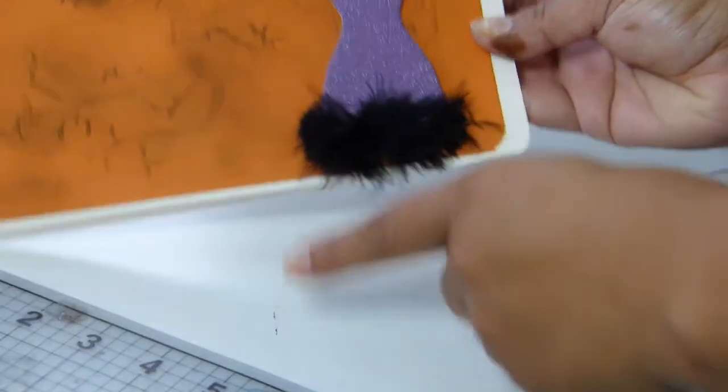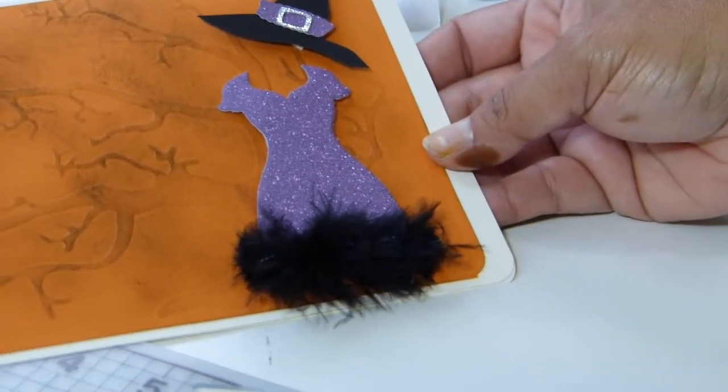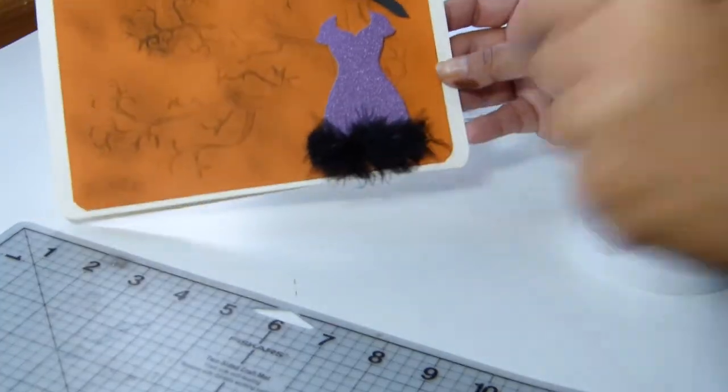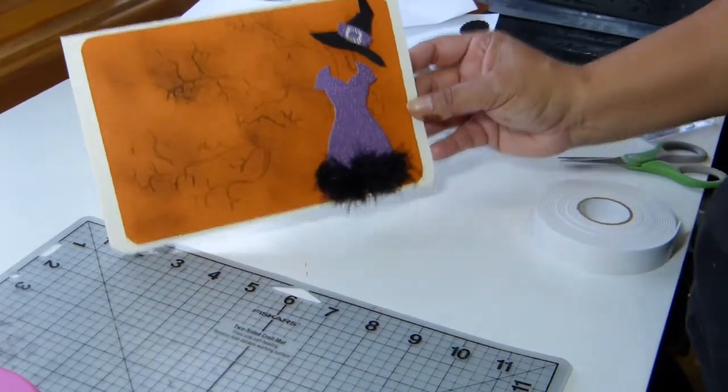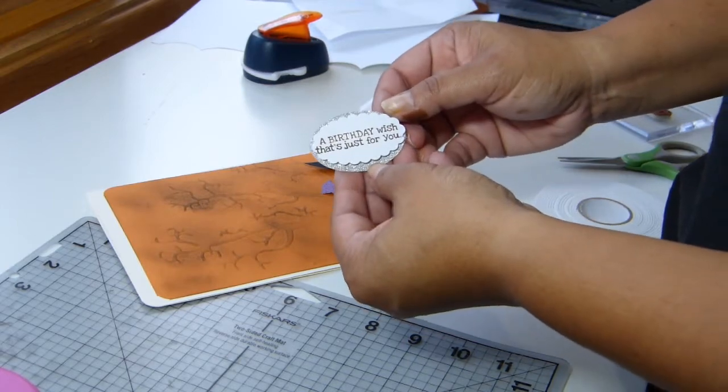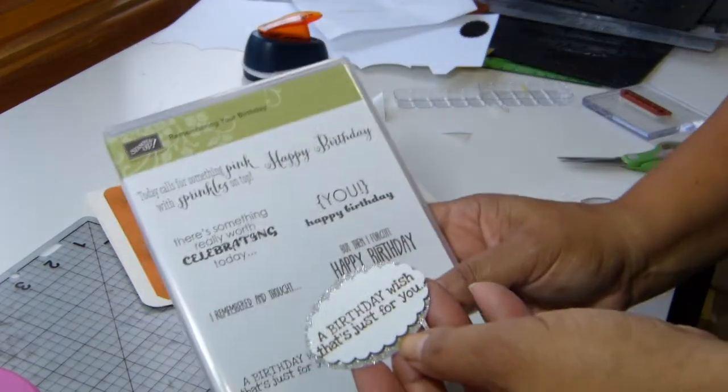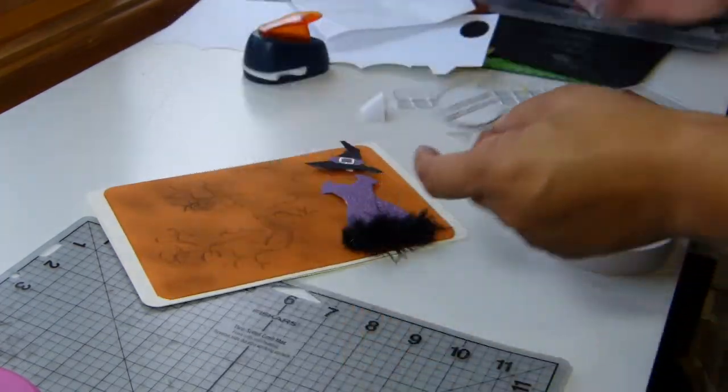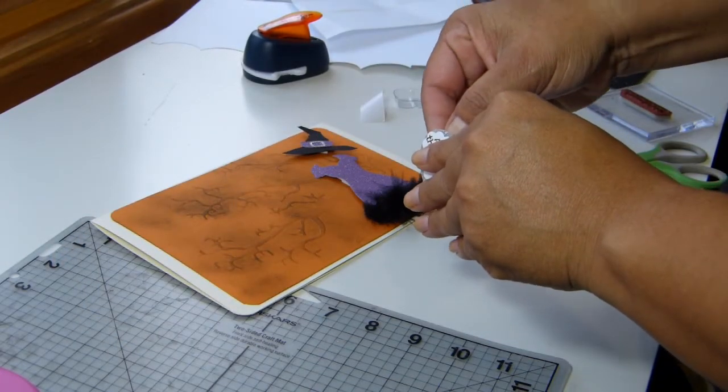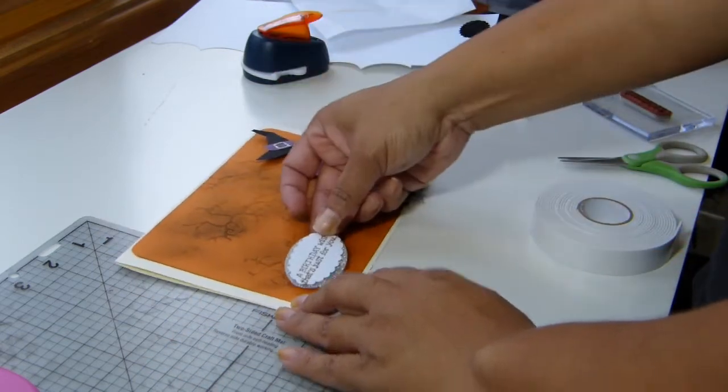Okay, so I went and put the little dress on with foam tape. And then I went ahead and stamped 'a birthday wish that's just for you' from the Remembering Your Birthday stamp set. I'm going to put it right here. And I used the large oval and large scallop punches. I think I'm just going to put it here.